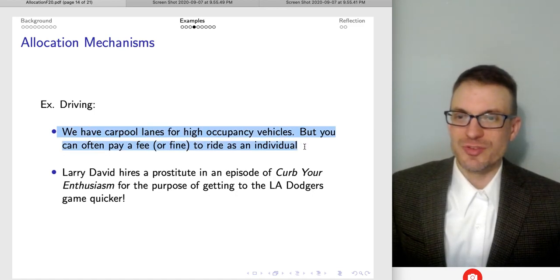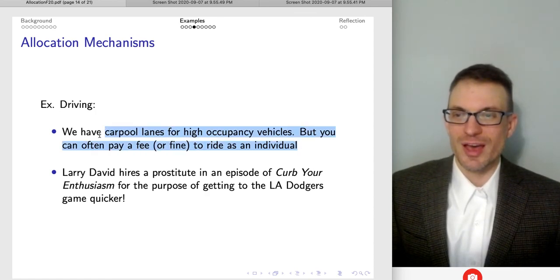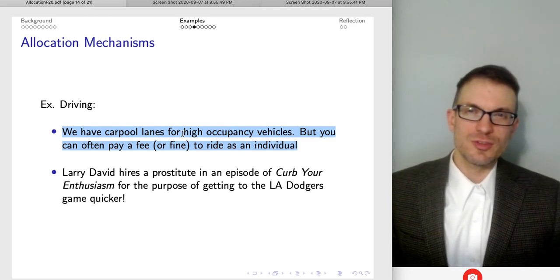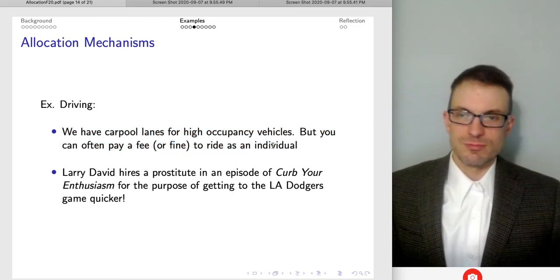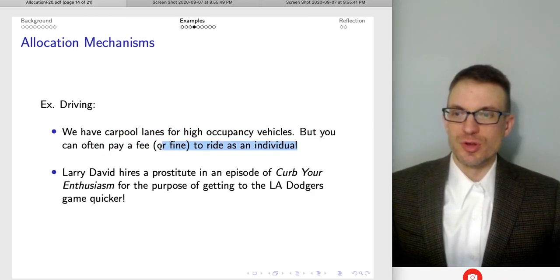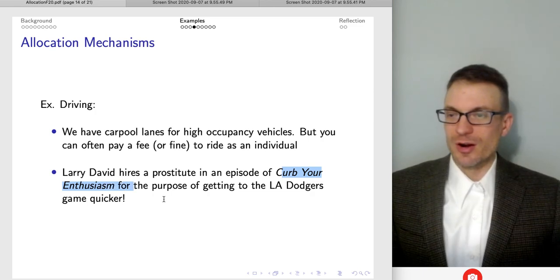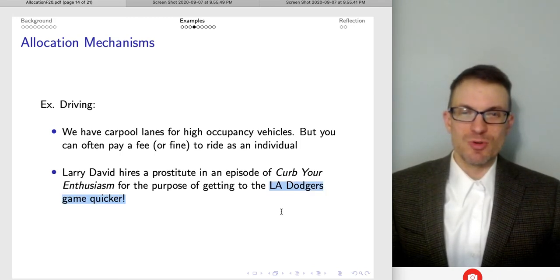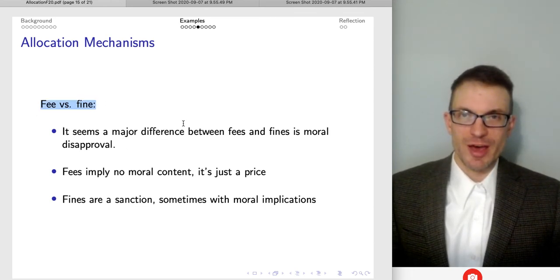So here's a driving example. So we have carpool lanes for high occupancy vehicles. You can often pay a fee or a fine to ride as an individual. So if you ride in the HOV lane, or if you ride in the carpool lane, and sometimes you pay a fee to be allowed to do this. So there's one of these, I'm getting the, I think it's 470 around Denver. And there's some other places you go and pay the fee for this lane. In other cases, you jump in there as an individual and run the risk of being pulled over and paying a fine. There's an interesting example from Curb Your Enthusiasm, where Larry David hires someone to help Larry David get to the LA Dodgers game quicker. So you think of the different sorts of ways that people try to get around the high occupancy lane.